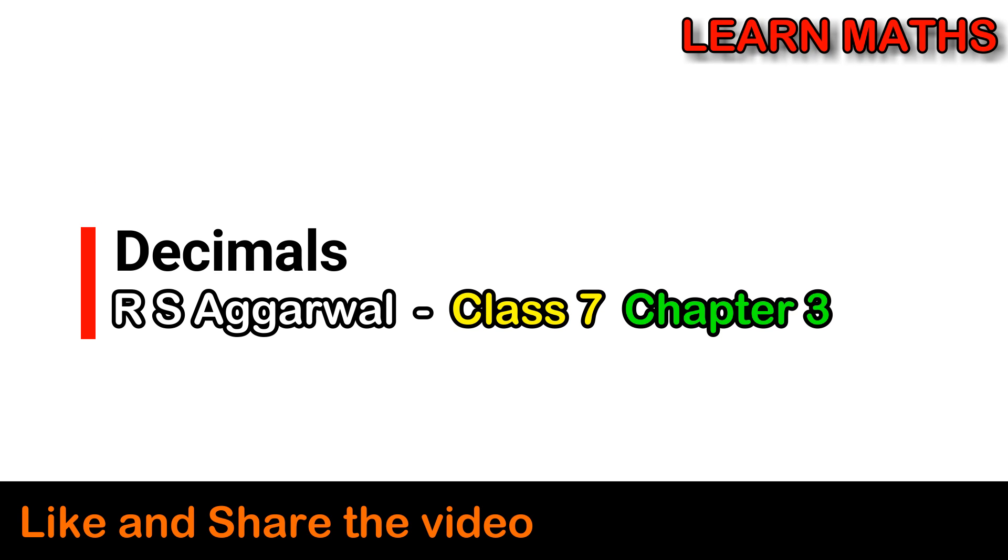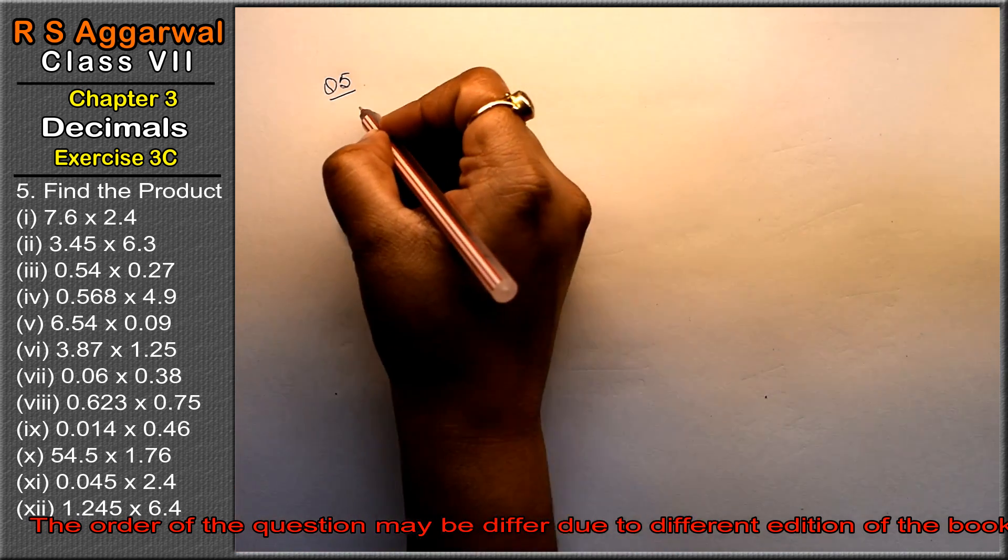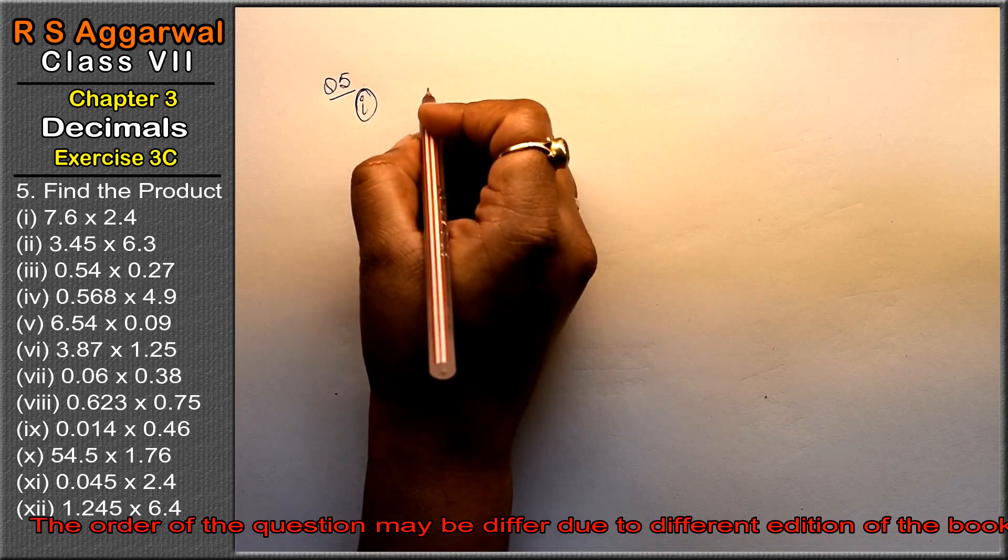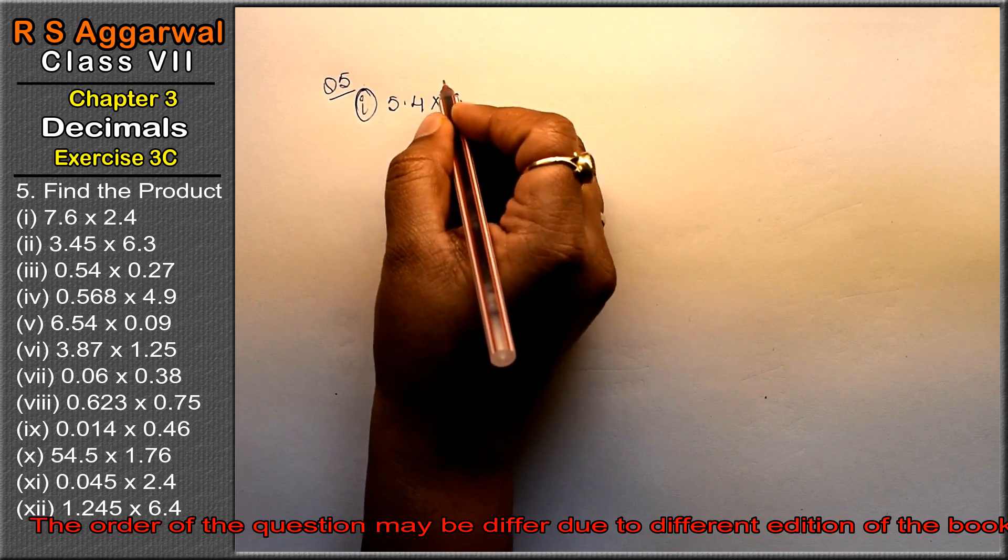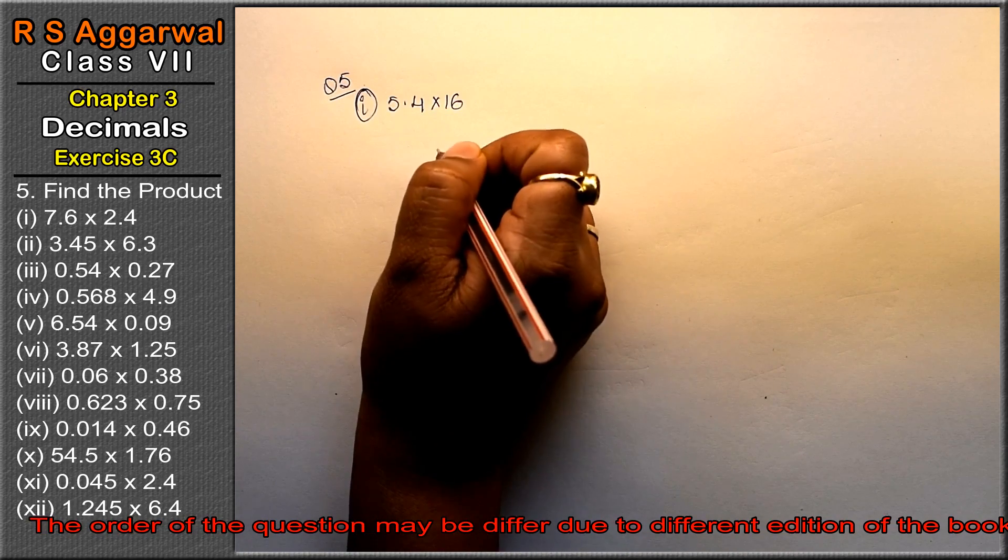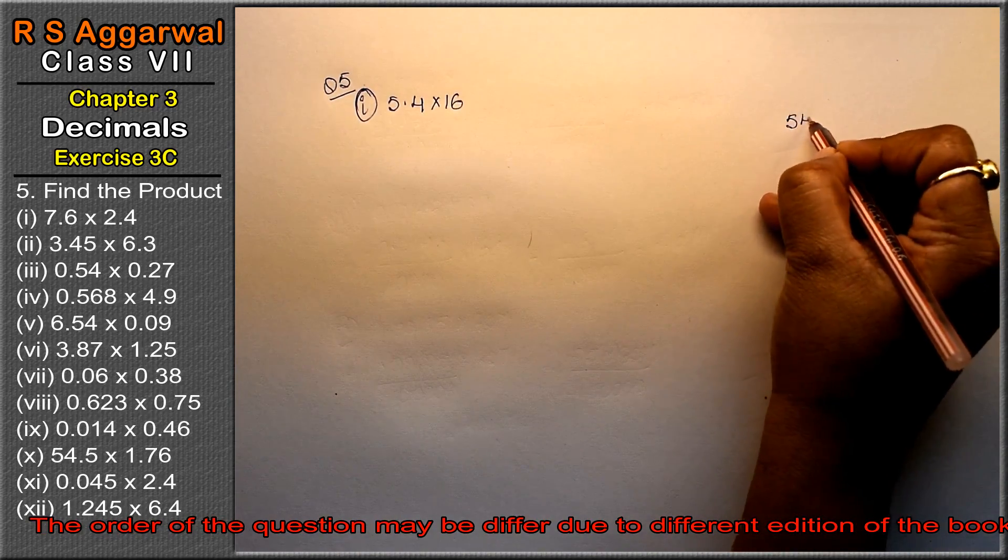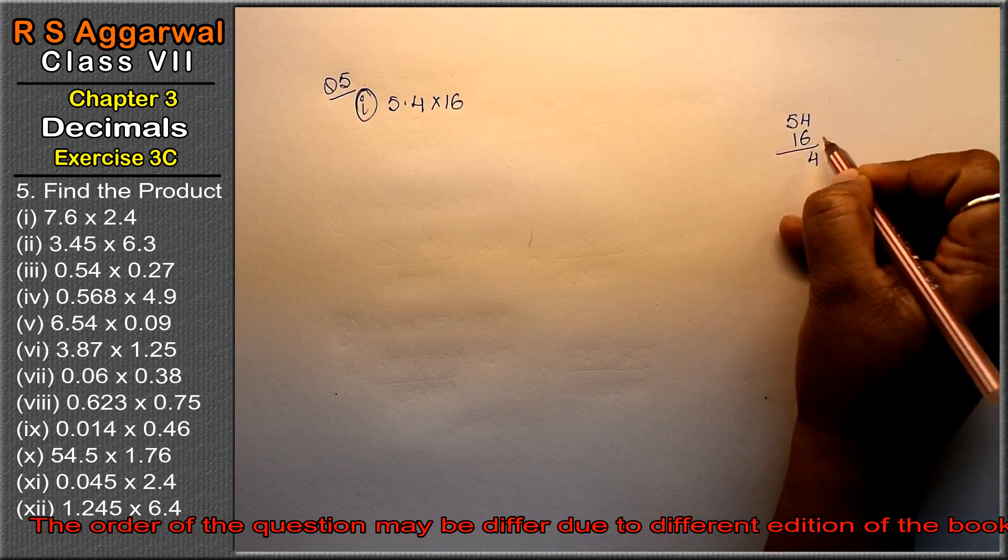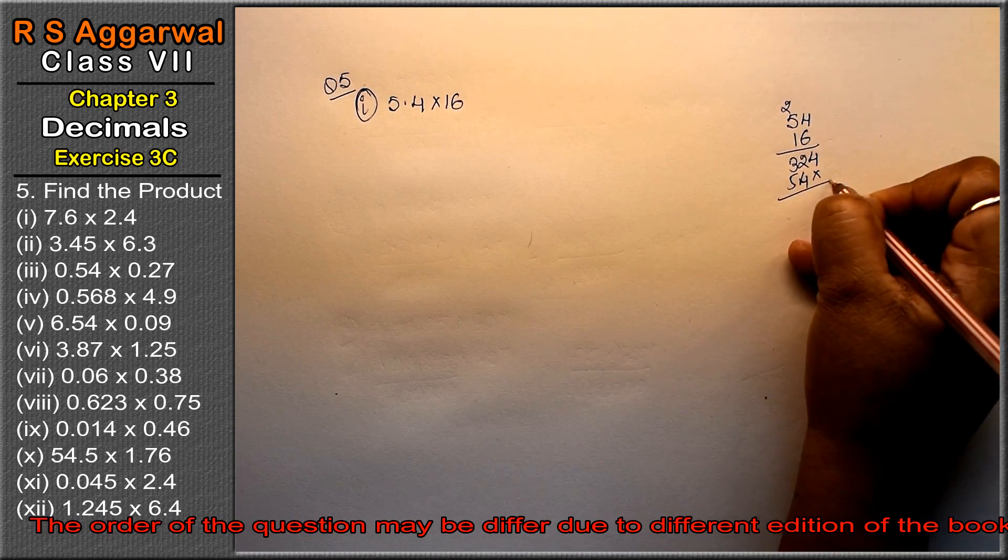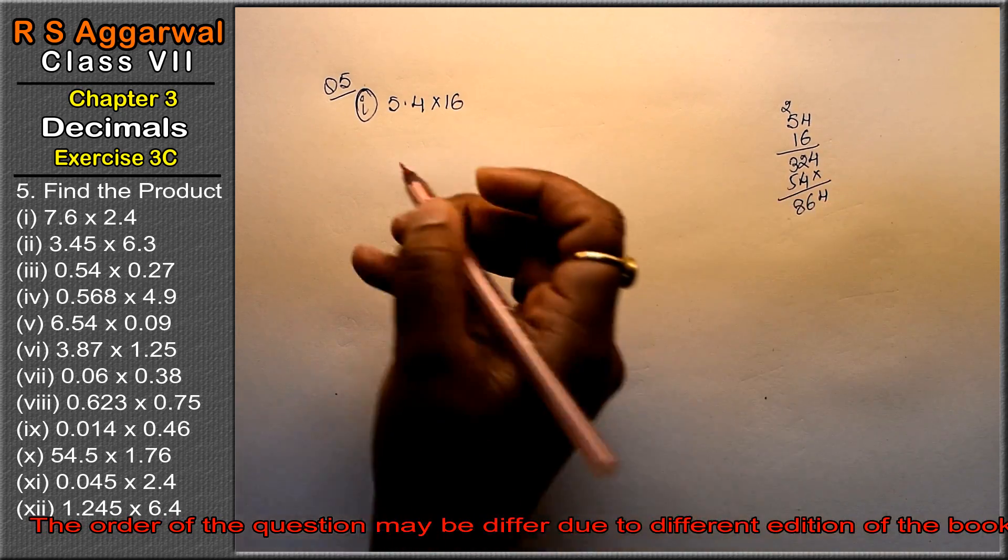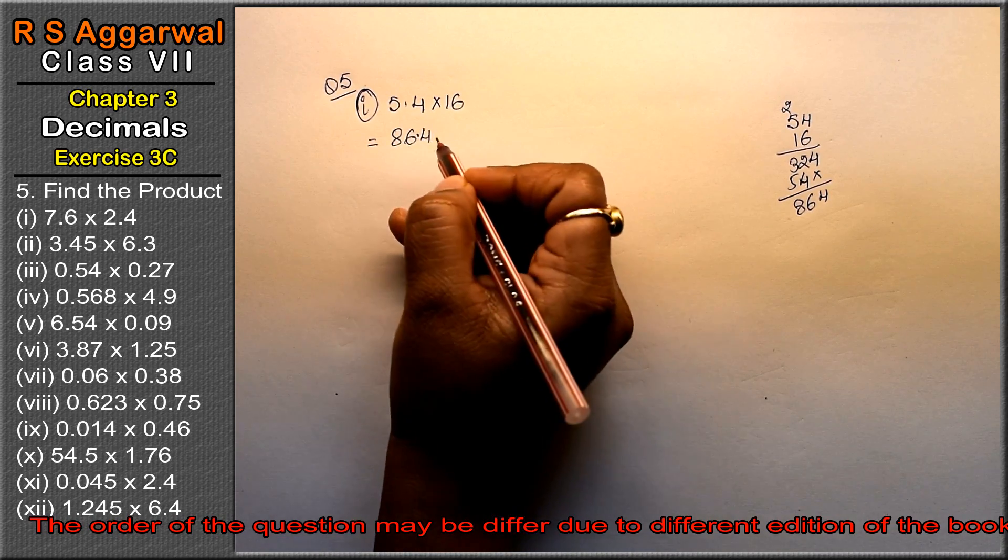Let's do question number fifth of exercise 3C, the decimal question. Find the product. First part: product means multiplication, we need to do 5.4 into 16. You can multiply ignoring the point then divide, or multiply directly. 6 times 4 is 24, 6 times 5 is 30. This comes to 86.4, and after one decimal place the point comes, so the answer is 86.4.